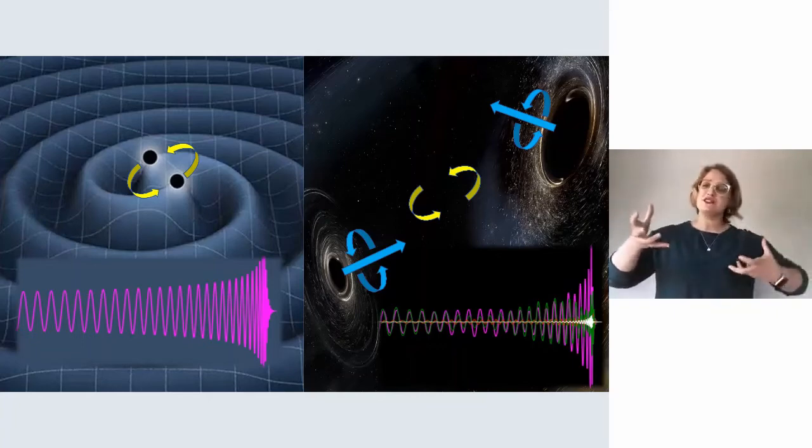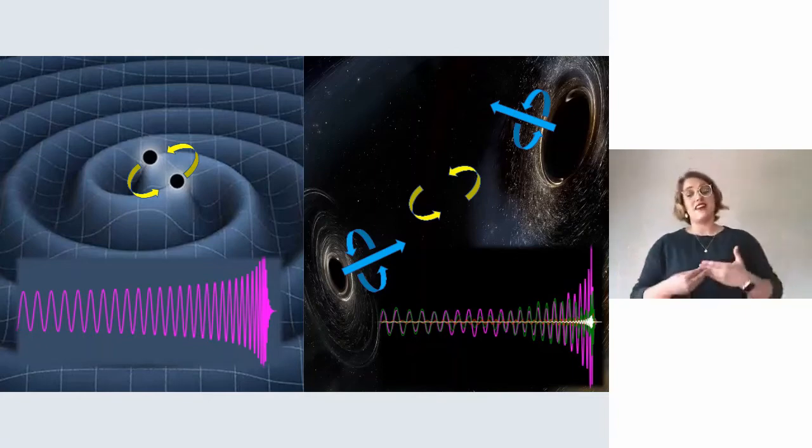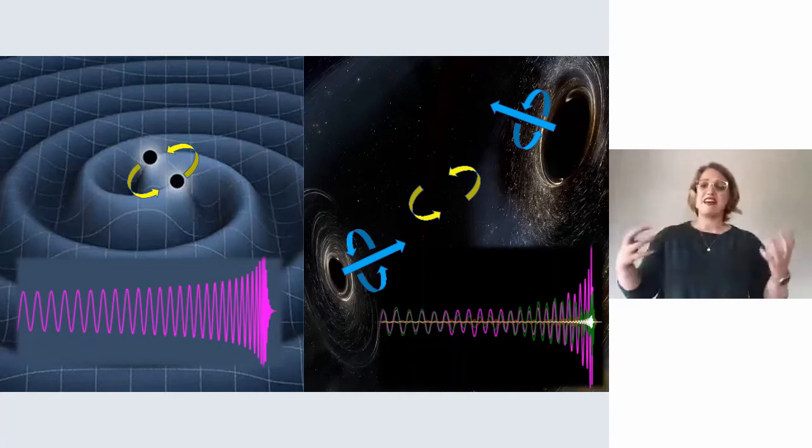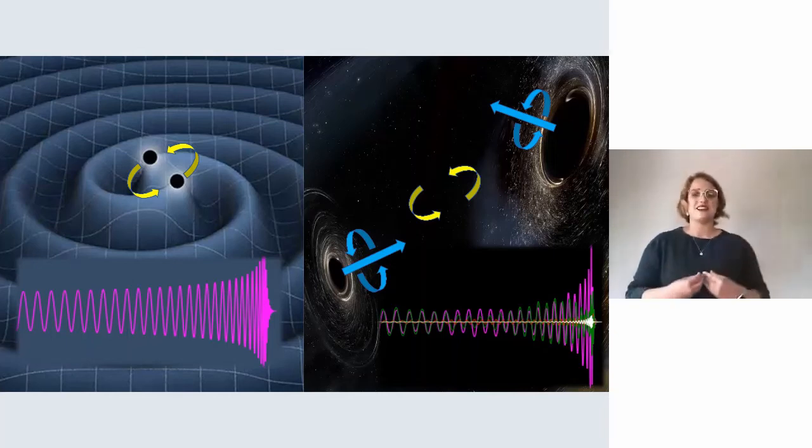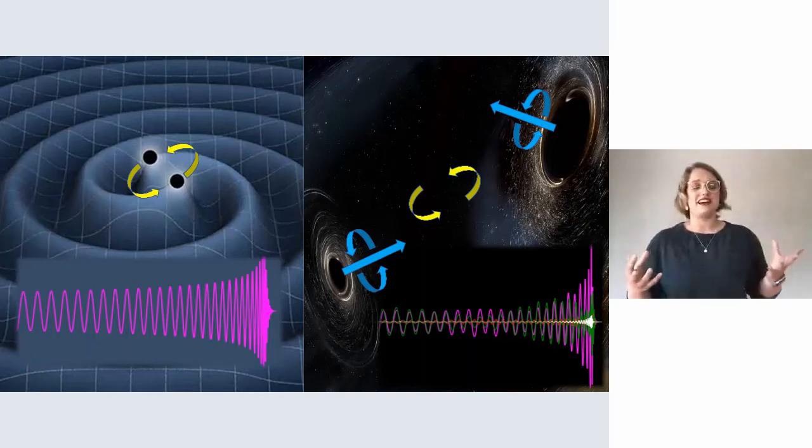This is shown by the blue and yellow arrows in the image on the right. Picture the black holes dancing together but also individually pirouetting. This minor detail has a dramatic effect on the gravitational waves they produce, introducing complex extra oscillations like in the bottom right. It's important to capture these features in our models because the extra oscillations give us vital information about the gravitational behavior.